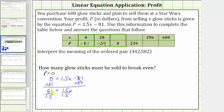81 divided by 1.5 equals 54. On the right, 1.5 divided by 1.5 equals 1, so one times X is X. When P equals zero, X equals 54, which means if 54 glow sticks are sold, the profit is zero dollars.